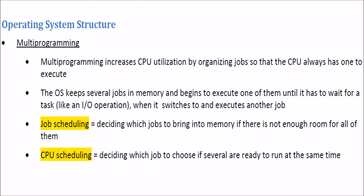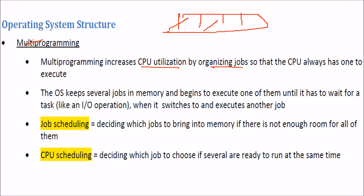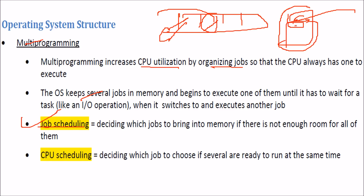Regarding OS structure: multiprogramming increases CPU utilization by organizing jobs so the CPU always has something to do. The OS kernel keeps jobs in memory and begins executing them one by one. If a job must wait for I/O, the OS switches to another job. Which job to bring into memory is handled by job scheduling; which job the CPU takes next is CPU scheduling.